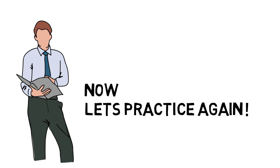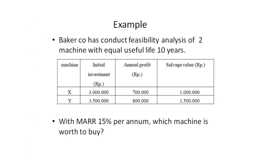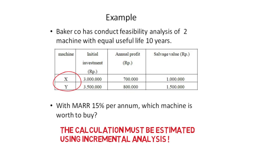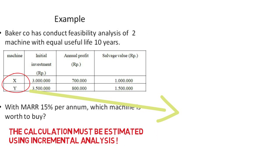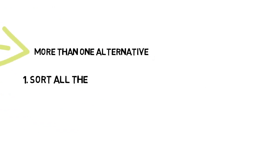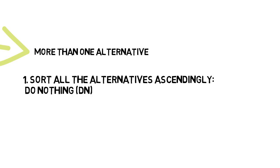Now let's work through a challenging case. The Baker Co has conducted a feasibility analysis of two machines with equal useful life of 10 years — Machine X and Machine Y. They have different initial investment, annual profit, and salvage value, with an interest rate of 50%. The question is: which machine is worth buying? The answer requires incremental analysis because we have two alternatives with equal useful life.